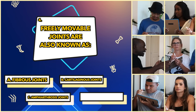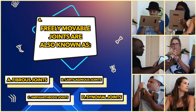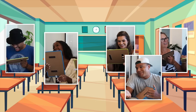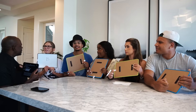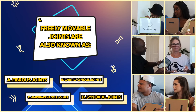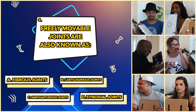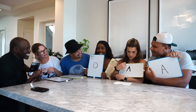Freely movable joints are also known as: A, fibrous joints; B, cartilaginous joints; C, amphiarthrosis; or D, synovial joints. So you're looking at my answer yet again — this is why I'm going to run away with the lead. That last word just sounded made up. The correct answer is D, synovial joints.